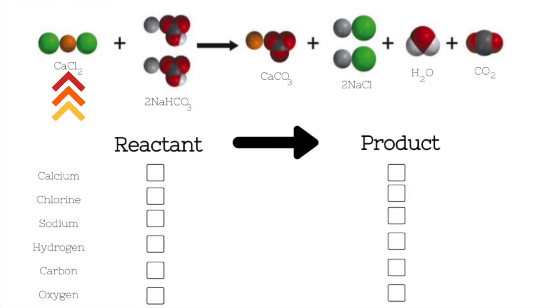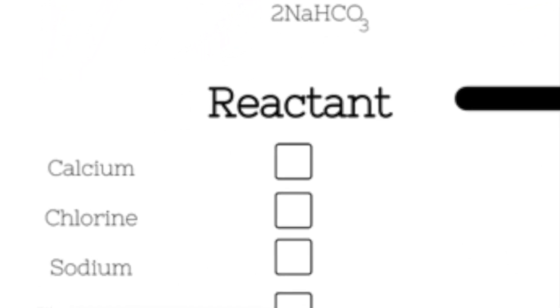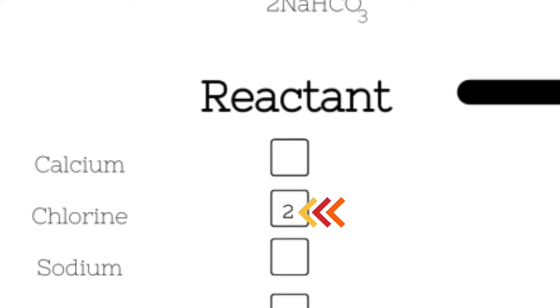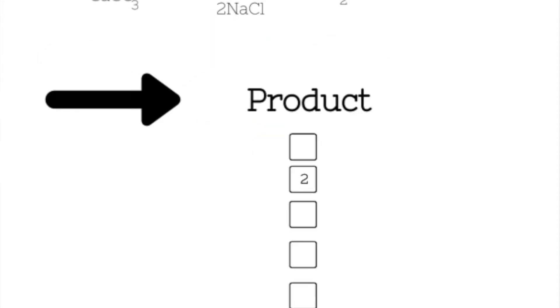We're going to first look at this molecule, which contains one calcium and two chlorines. I'm going to place an X over the two chlorine atoms. And then I'm going to mark in my chart that there were two chlorine atoms on the reactant side of this equation. And then I'm going to move to the product side of this equation and also put X's on the two chlorine atoms. And then list two in the product side of my chart.